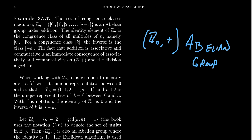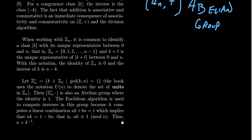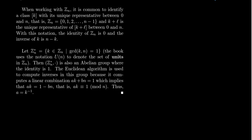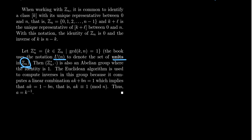Just as with the rationals, reals, and complex numbers, we can form a group under multiplication by removing certain elements. For Z_n, we define Z_n* as the set of integers in Z_n that are coprime to n — those k where gcd(n, k) equals 1. Some textbooks, such as Judson's, use the notation U_n for this same set, thinking of Z_n as a ring and these elements as its group of units. Z_n* under modular multiplication forms an abelian group.